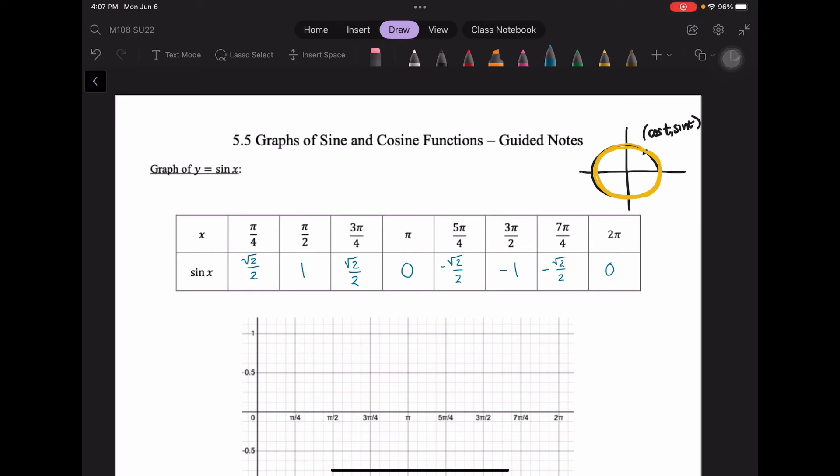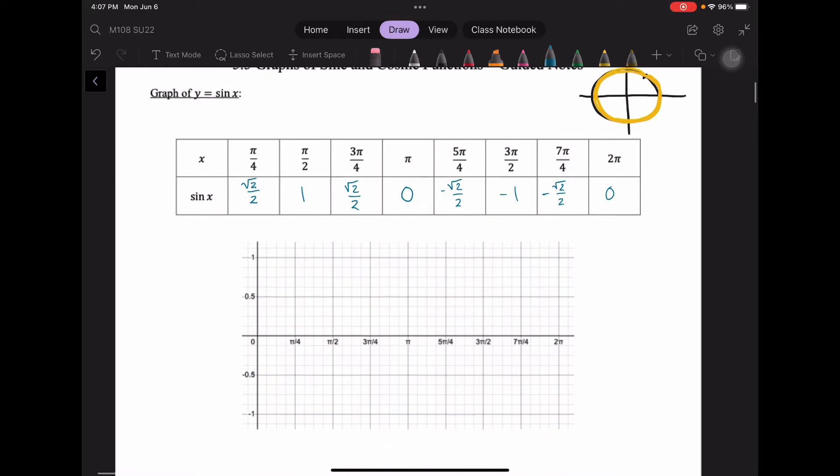So notice that we're cycling through these values. We're going up to 1 and down to negative 1. We hit 0, and then we have root 2 over 2. Now, sine is a cyclical function. It has a wave. We call it a sine wave. So I'm going to graph these points so you can get a picture of what the sine curve looks like.